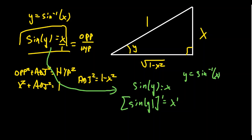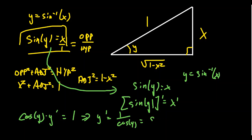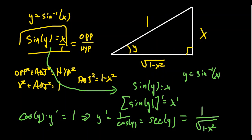By the chain rule, the derivative of sine of y with respect to x is cosine of y times y prime. And the derivative of x with respect to x is just 1. So we get cosine of y times y prime equals 1. We can solve for y prime by dividing both sides by cosine: y prime equals 1 over cosine of y. We could write this as 1 over cosine of sine inverse of x, but better yet, we already know what to do with cosine of y from our triangle. The cosine relationship is adjacent over hypotenuse, so its reciprocal — secant — is hypotenuse over adjacent. We end up with 1 over the square root of 1 minus x squared for the derivative of sine inverse. That's exactly what we said it was going to be.